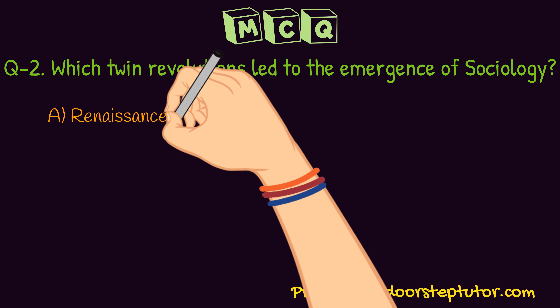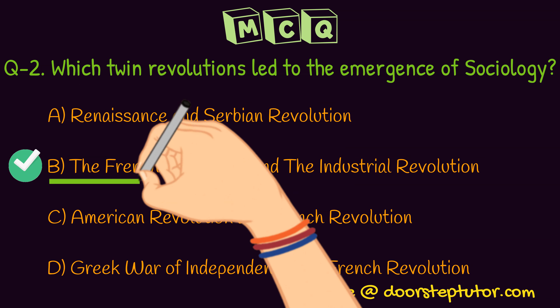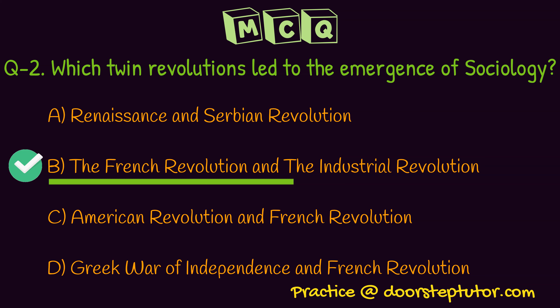Sociology emerged after the French Revolution and the Industrial Revolution, when a lot of changes were taking place in society and there was a birth of logic and rationality. The changes happening were on a very drastic level — science and mathematics could not answer them. A new discipline, a new type of science, was required to understand the behavior that was changing all dimensions. Therefore, after the French Revolution and Industrial Revolution, sociology emerged as a discipline. I hope you got the lecture. Thank you for watching.